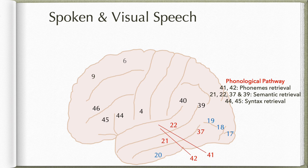This is how spoken speech is understood: first phoneme retrieval at the auditory areas, then semantic retrieval at the higher association area and angular gyrus, and for syntax retrieval the information is sent to Broca's area.